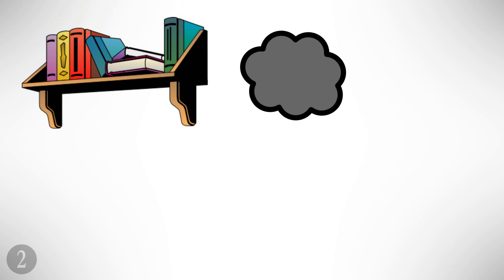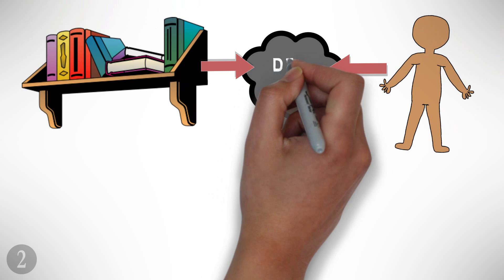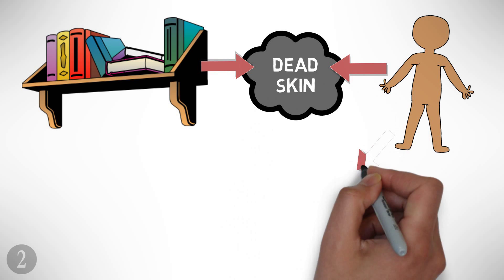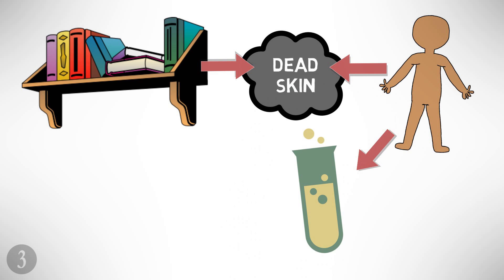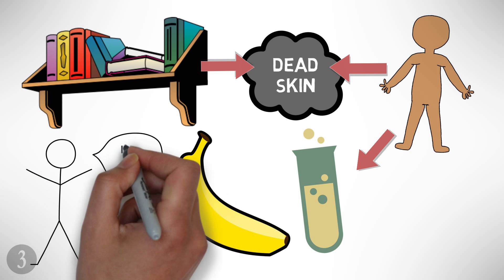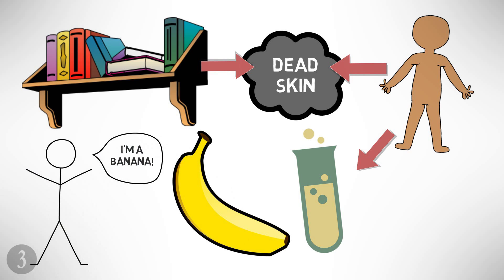Number two: run a finger along a dusty shelf and you are drawing a pattern very largely in dead skin. Number three: about half the chemical functions that take place in a banana are basically the same as the chemical functions that take place in your body. Yes, you've been part banana since you were born and you didn't even know it.